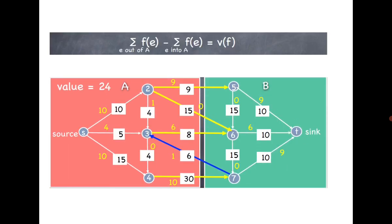Consider one more example: the value of the flow is 9 plus 9 plus 18 plus 6 equals 24 for the net flow across the cut, and it always remains 24 regardless of which cut you choose.